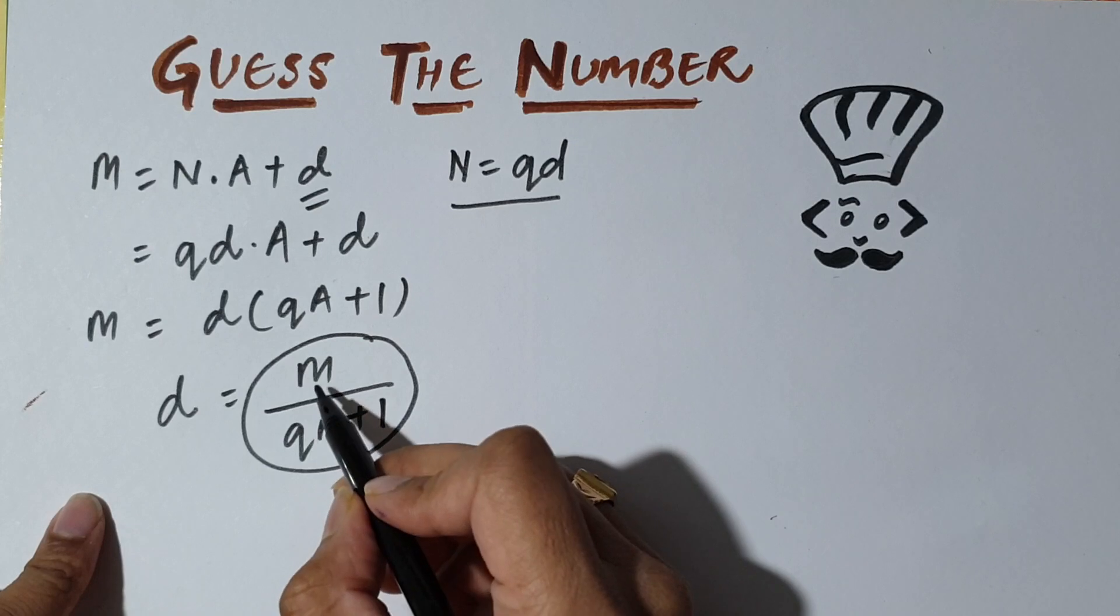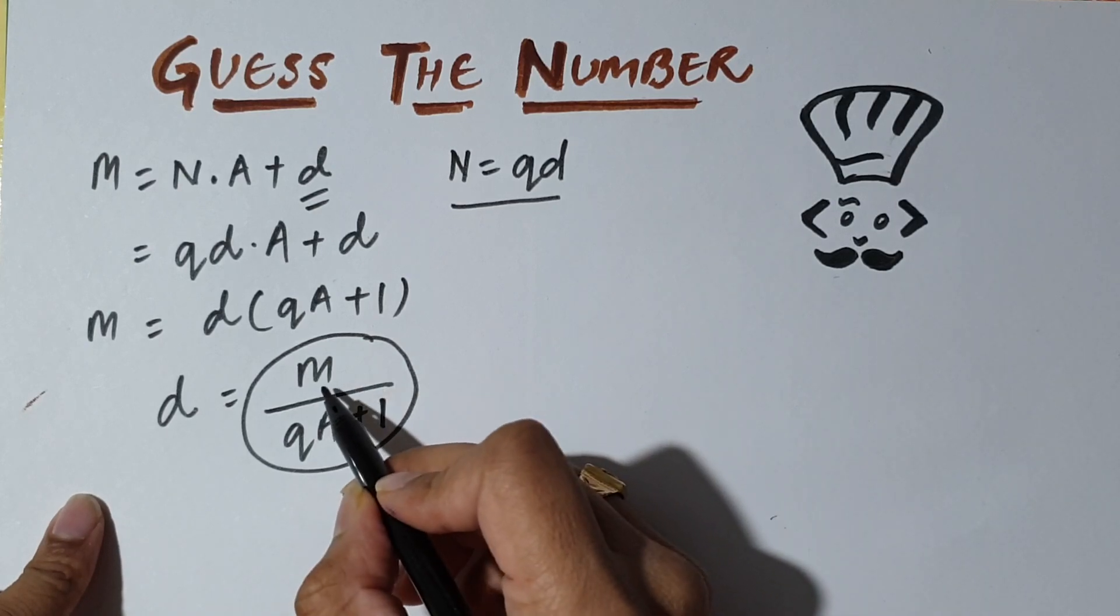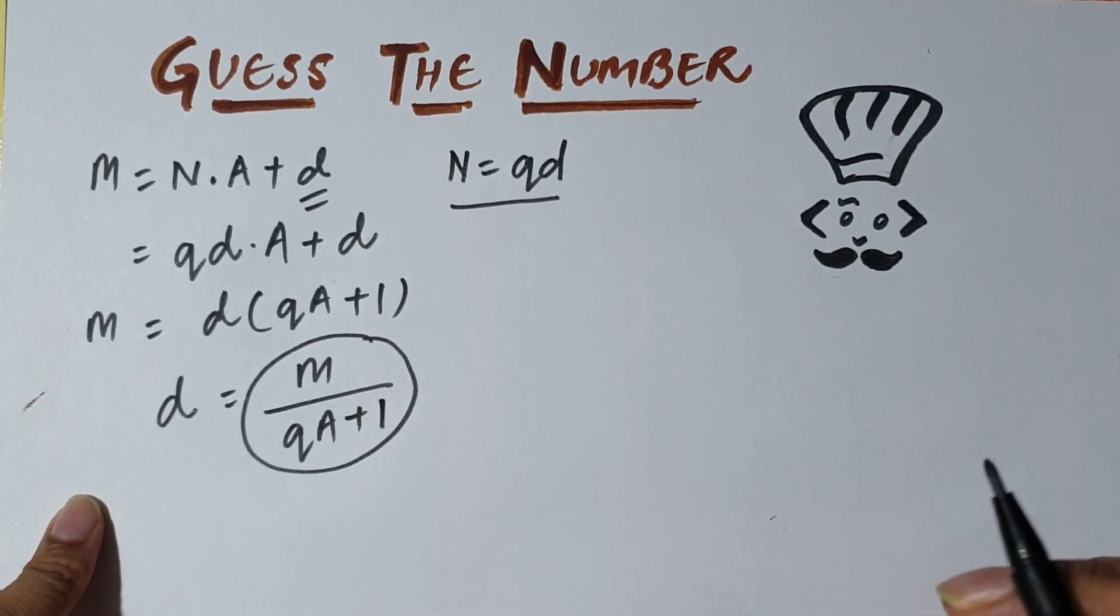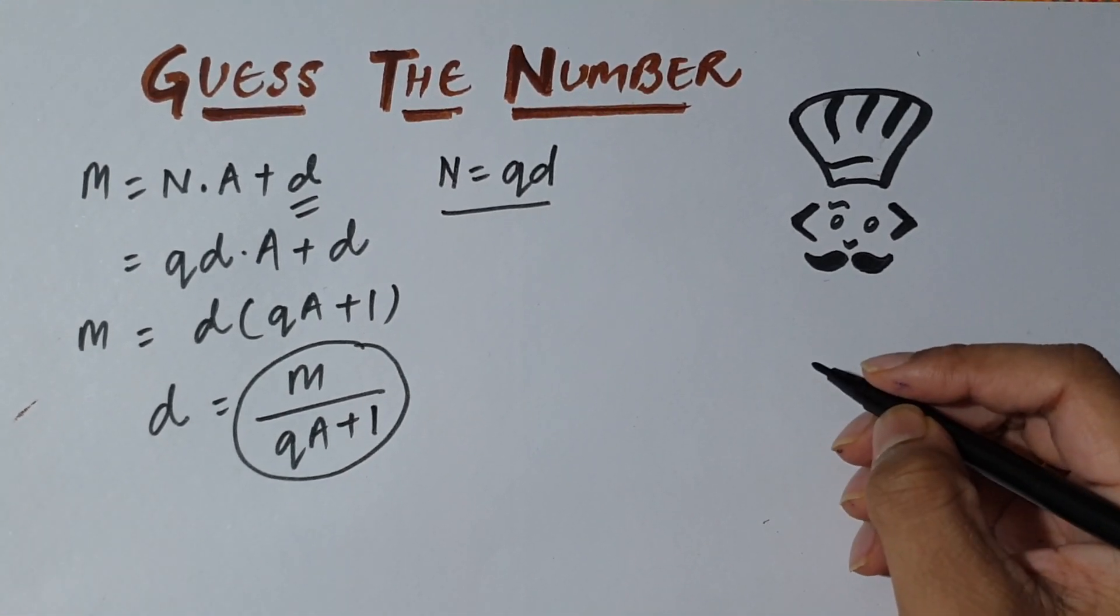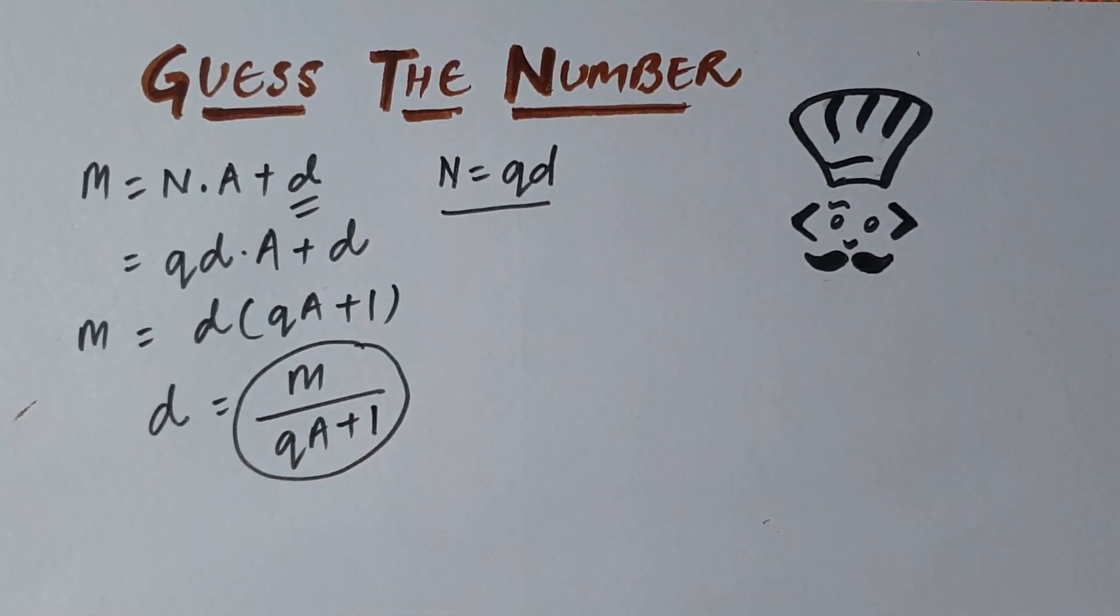So what we do is we calculate all factors of M and store it in a list. Suppose we have a list called factors.